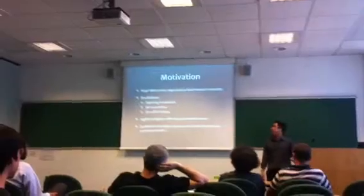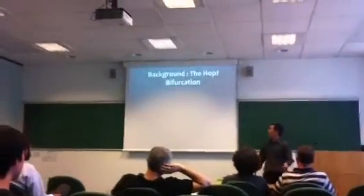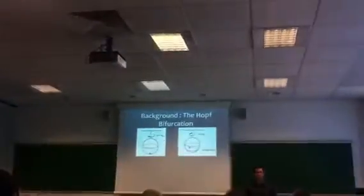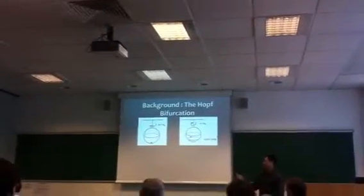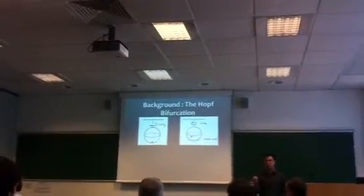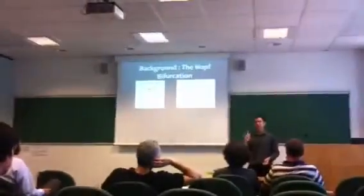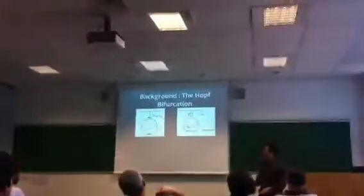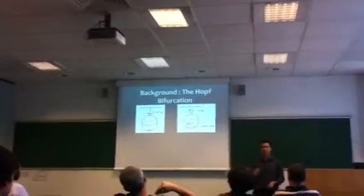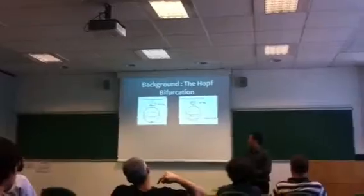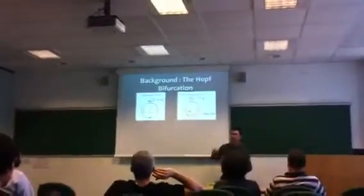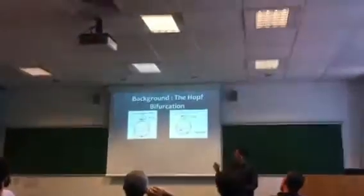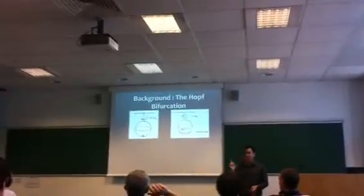Let's begin by giving some background on the Hopf bifurcation. I would like to demonstrate using two very simple diagrams to illustrate the Hopf bifurcation. On your left is a hollow sphere with a small ball in the hollow sphere. The sphere is rotating with an angular frequency omega, rotating with a frequency below the critical frequency. As such, the point at the bottom of the sphere is an attractive equilibrium. However, when we increase the angular frequency of the sphere beyond the critical omega, the point at the bottom becomes unstable.